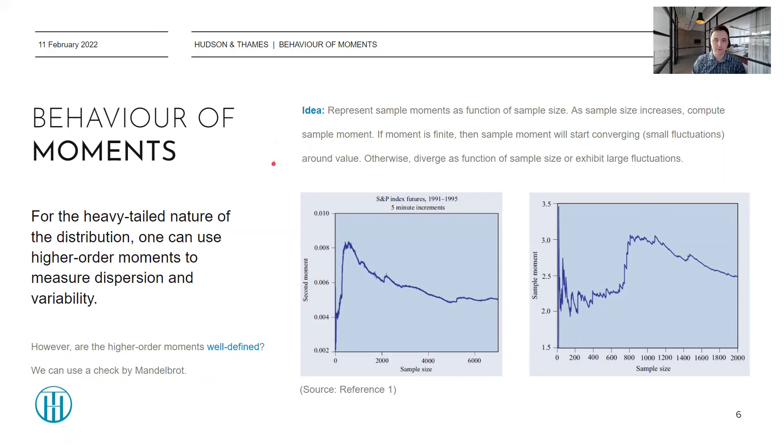The idea is as follows. Represent the sample moments as a function of your sample size, and as the sample size increases, recompute the sample moments. To show an example of this, let's consider this first plot, which is again for the S&P index futures from 1991 to 1995 in 5-minute increments.